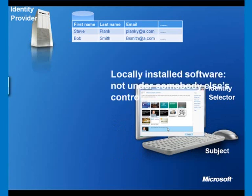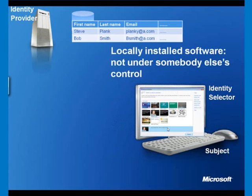Let's look at some features of this software. It's locally installed software, which means it's not under somebody else's control — unlike a web server where you log in and the web pages are under somebody else's control. This is a consistent piece of software. Every time it's installed onto somebody's machine, it gives the same user experience. So an identity selector is one of the things which will help in creating a consistent experience across contexts.